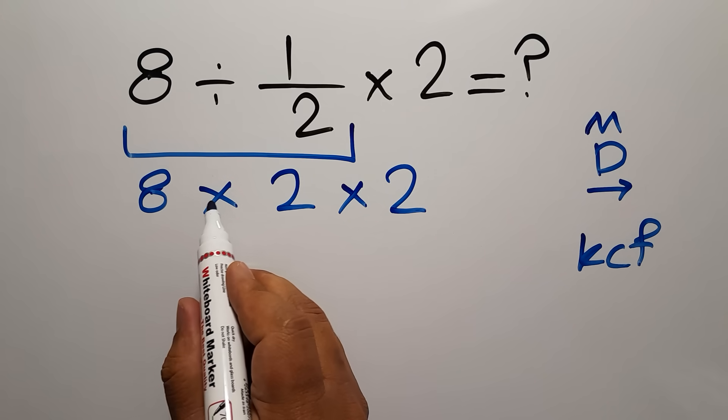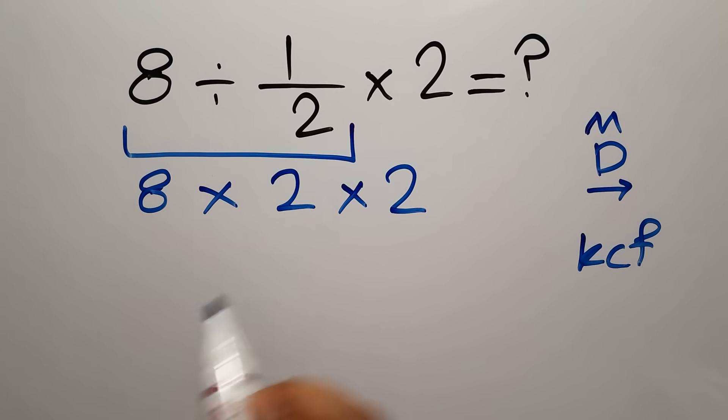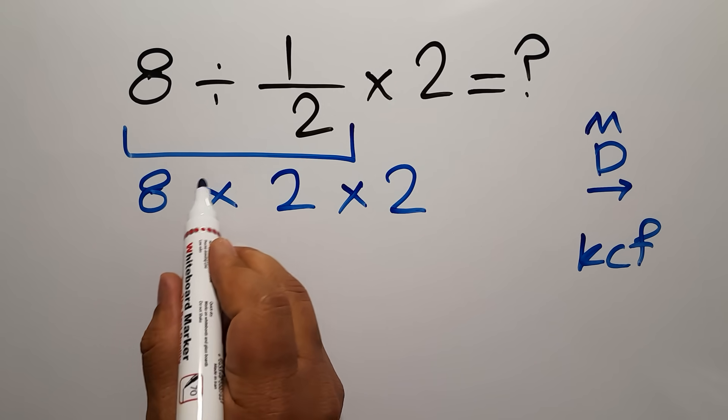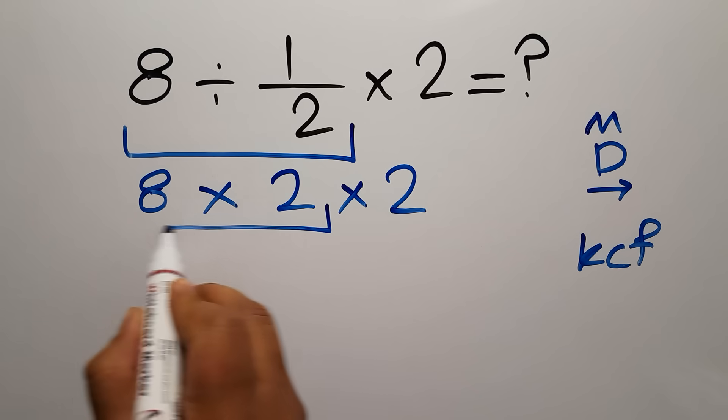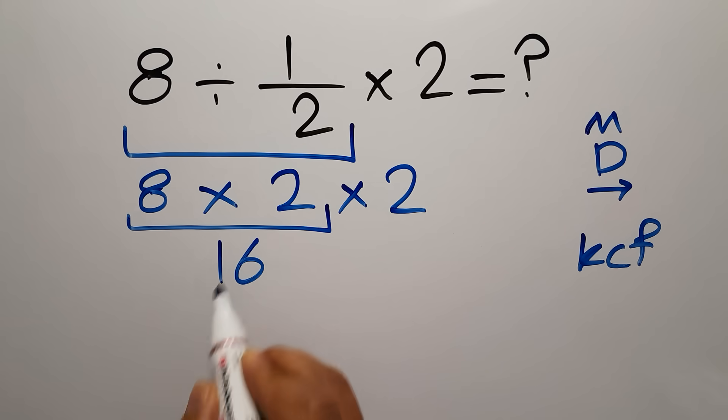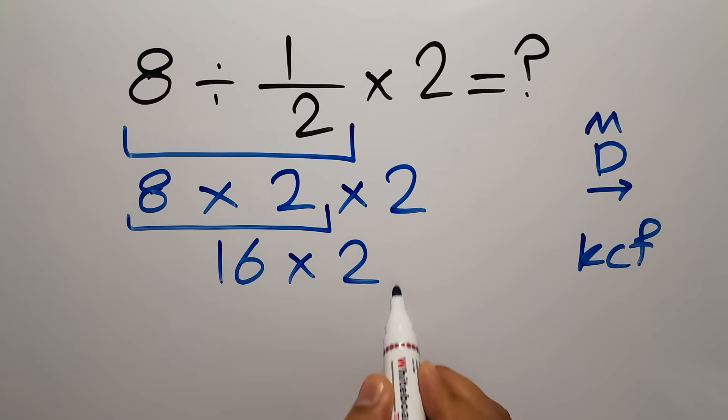Now we have two multiplications. When we have more than one multiplication in one expression, we have to work from left to right. So first this multiplication: 8 times 2 gives us 16.